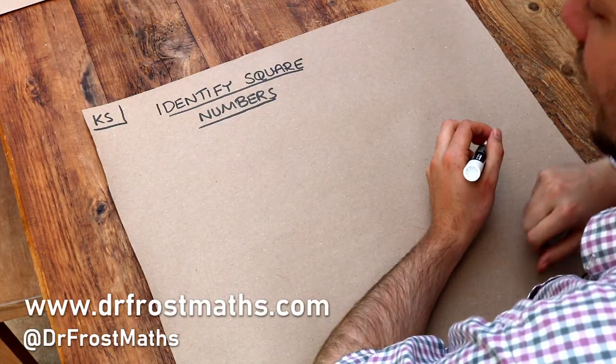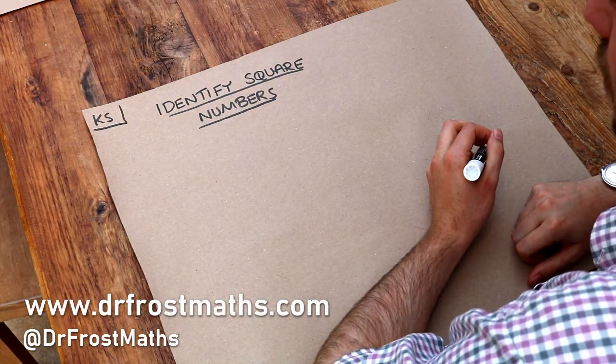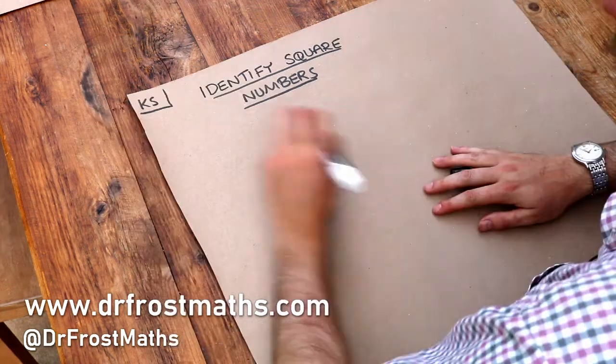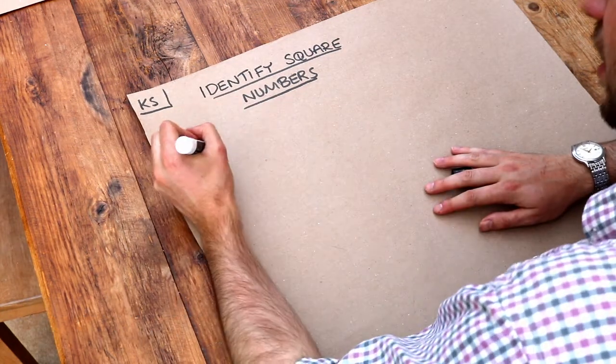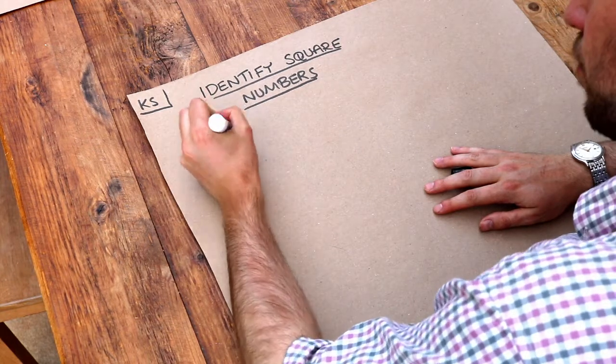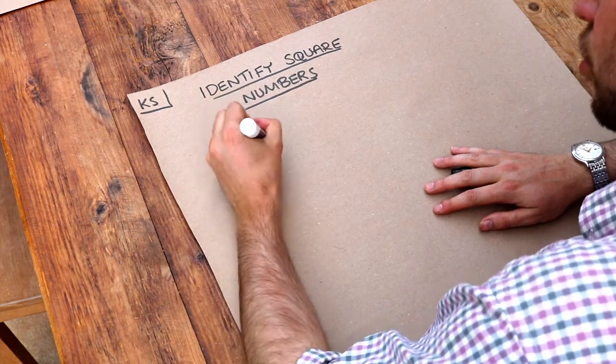Hello and welcome to this Dr Frost Maths key skill video on identifying square numbers. Now if we have some dots we could arrange them in a square-like pattern. So I could have a small square like that with two rows of two.